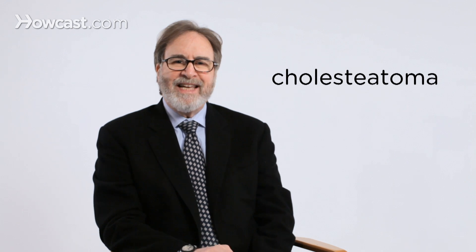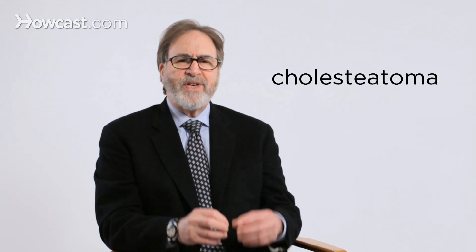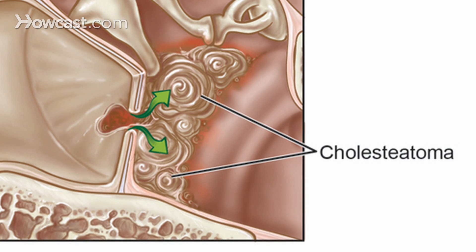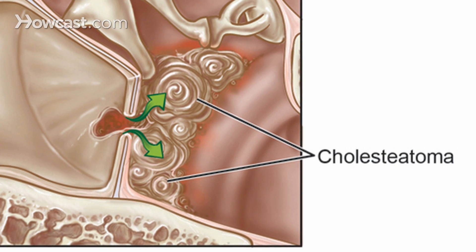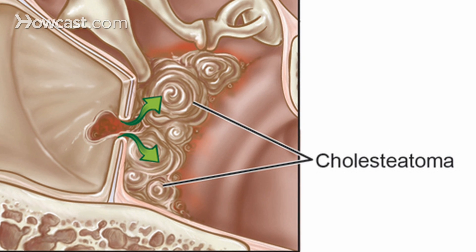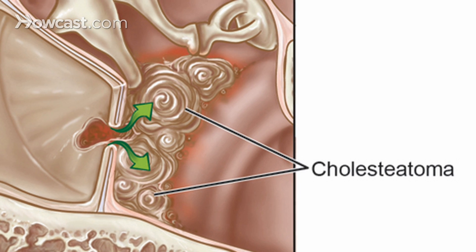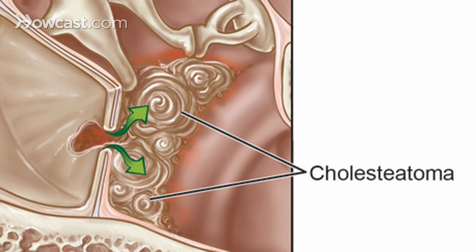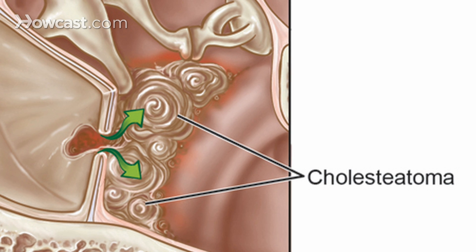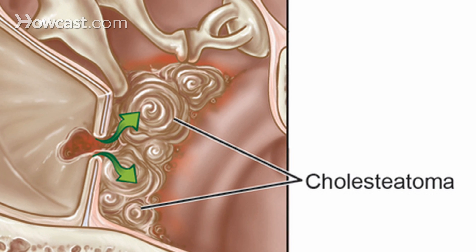When we speak about ear cysts, however, in general we are talking about a cyst in the middle ear, and that is called a cholesteatoma. It is a skin-lined cyst, and what happens is inside the cyst, dead skin is accumulating. That dead skin builds up and the cyst gets larger and larger, and eventually it can rupture through the eardrum and cause infections or hearing loss.